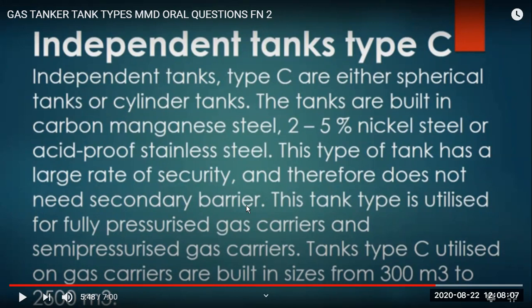The tank is used for fully pressurized gas carriers - the metal itself is very strong and no secondary barrier is required. It can also be used on semi-pressurized gas carriers for specialized cargo. The tanks are generally 300 to 2500 cubic meters - pressurized ships are very difficult to build and the thick material is expensive, so generally only small ships are fully pressurized carriers.